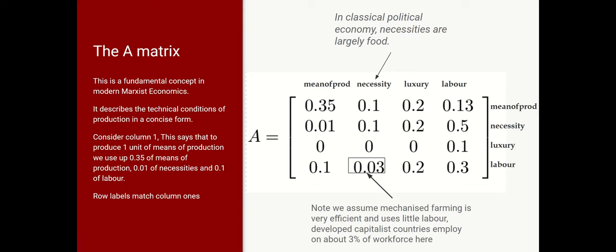Now, if we look at the necessities column, in classical political economy, the necessities column is food production, corn. And I've shown it here as only requiring 0.3 of a person. That's because that's the sort of percentage of the workforce that's required to grow crops in a developed mechanized capitalist economy.